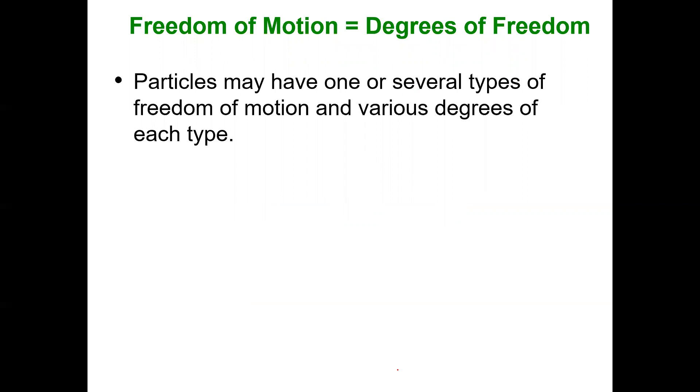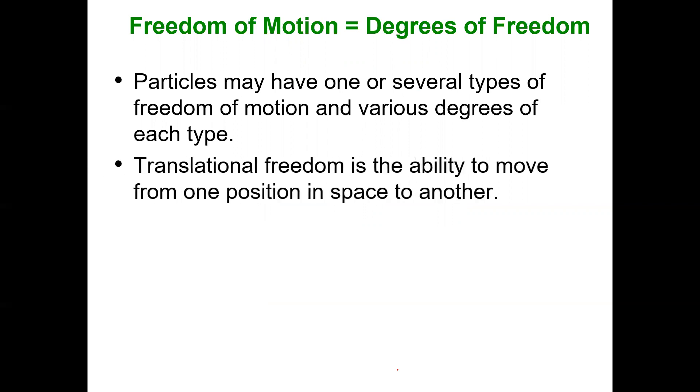So freedom of motion, really, you can think of it as a degree of motion. There's different types, and there's varying degrees of this motion. So one of the common ones is translational freedom. That's the ability to move from one position to another. So you can think of it as, can this particle or molecule move from this point along the x-axis to this point?